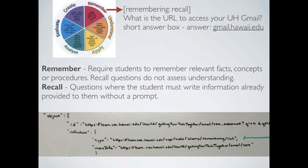We ended up putting this in the object definition's type field — so in there is a URL that has the whole URL, verbs, blooms, remembering list. Each one of those URLs will link to the page that pretty much has this information as well as example questions, so that our instructional designers, when working in other courses, can look at example questions to help them with the labeling. In retrospect, I think it might have made more sense to put this in extensions, but this is where we put it for now.